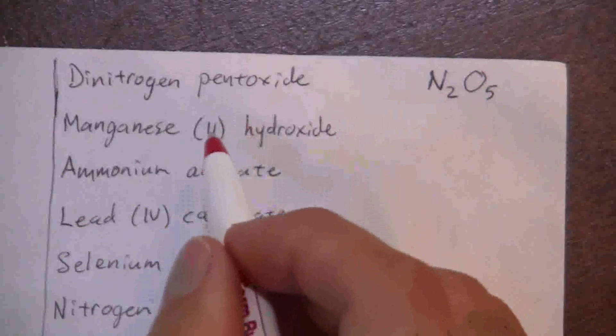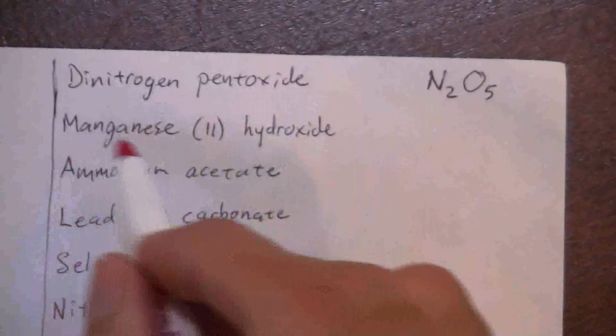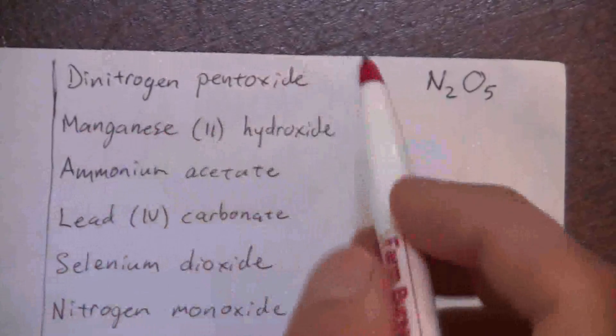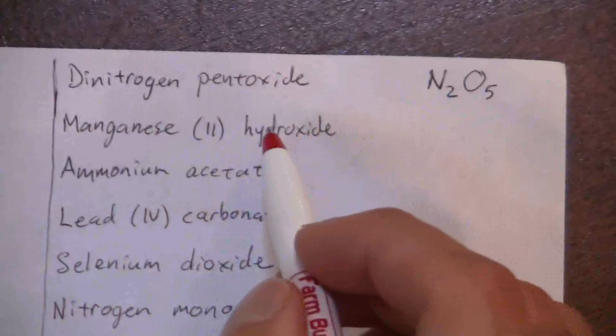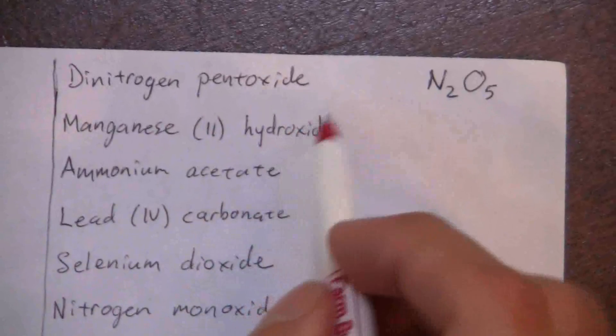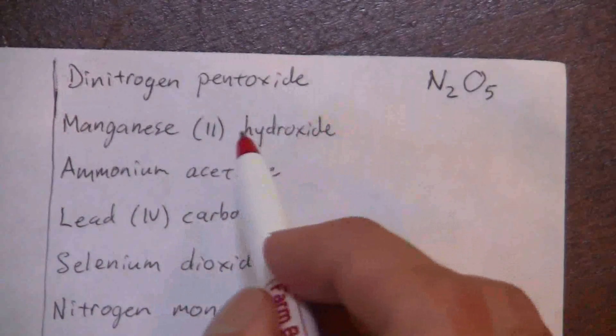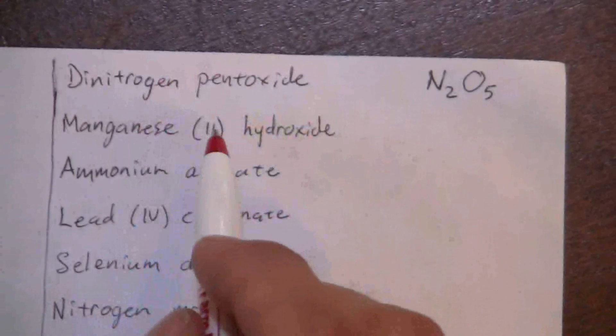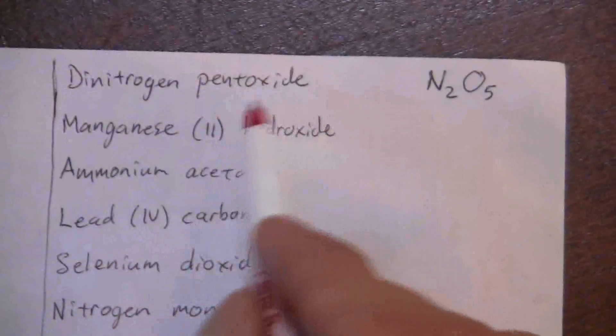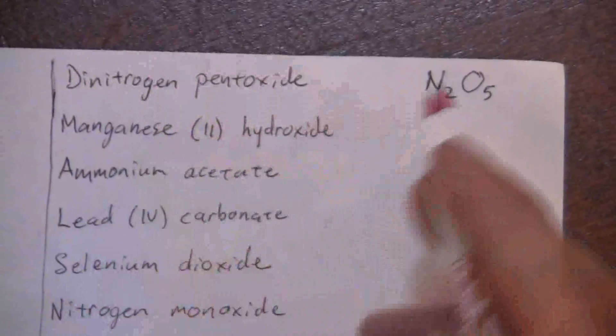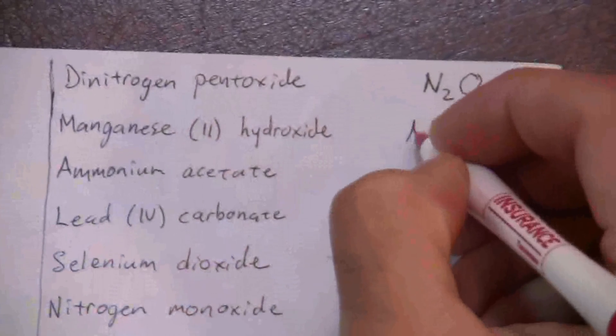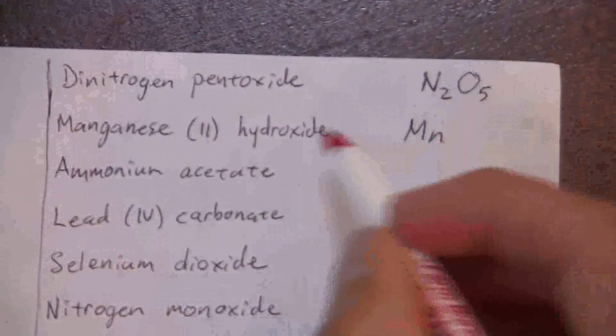Then we have manganese (II) hydroxide. The two tells us the charge of the manganese because that's a transition metal. Hydroxide we know is OH and it has a negative one charge. So if I have a positive two and a negative one, I need two hydroxides to balance out the manganese.